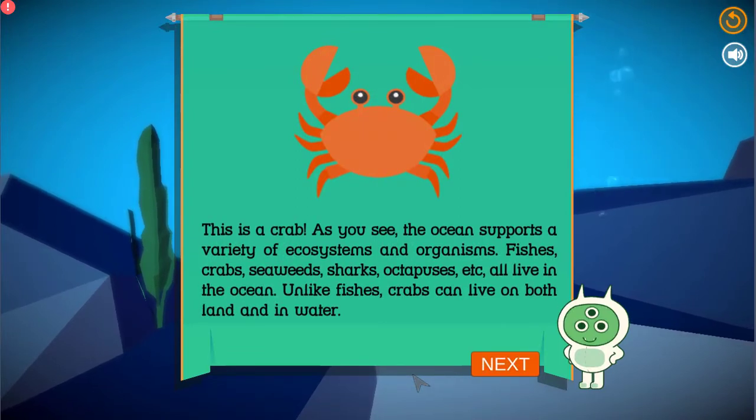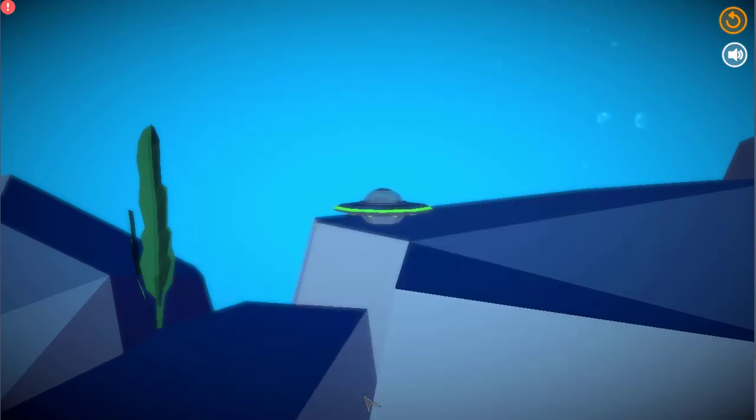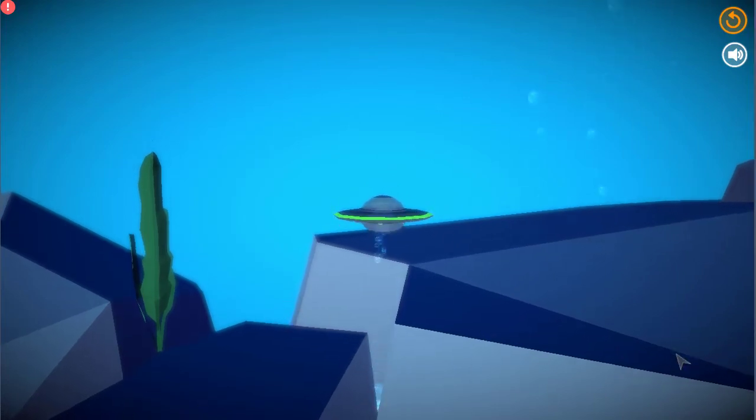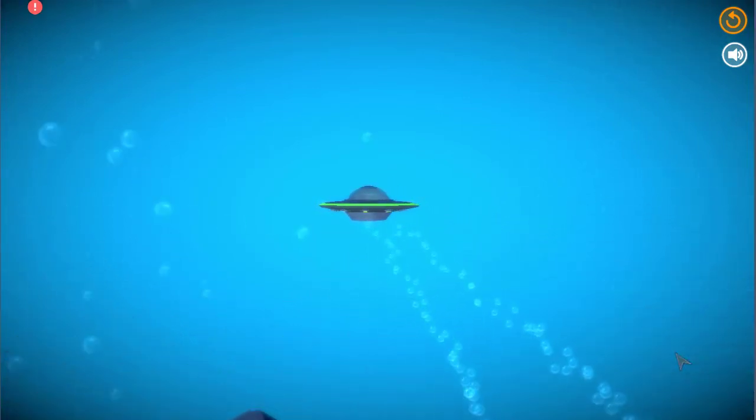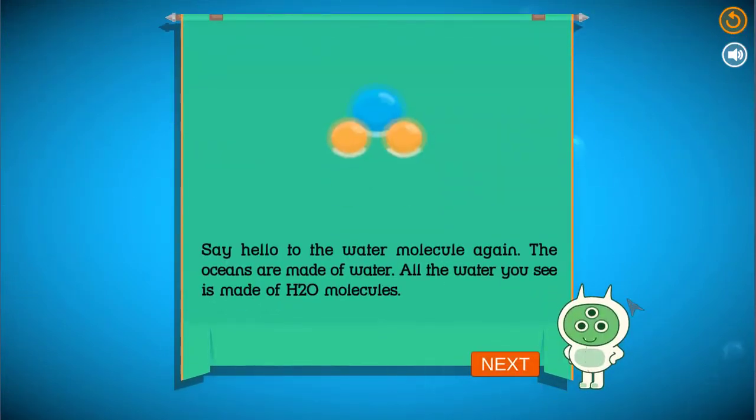This is a crab. As you see, the ocean supports a variety of ecosystems and organisms. Fishes, crabs, seaweeds, sharks, octopuses, etc., all live in the ocean. Unlike fishes, crabs can live on both land and in water.